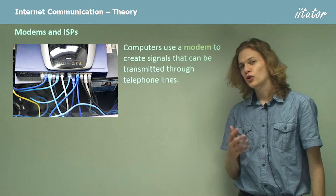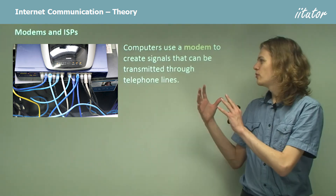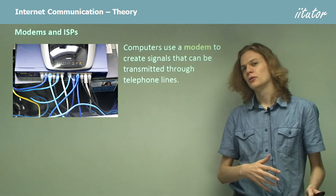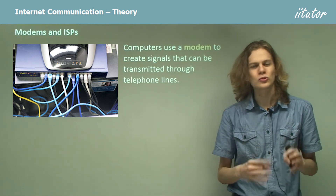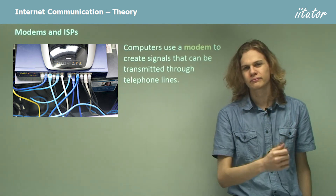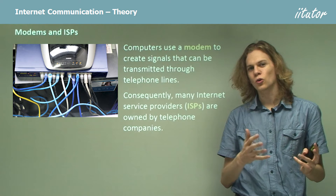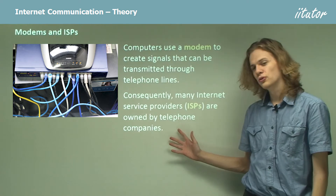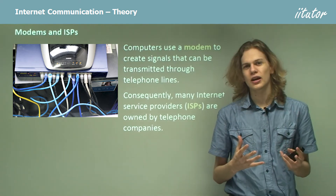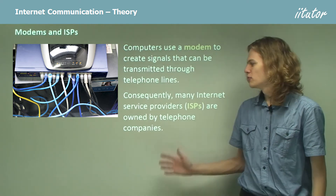Computers use a modem, which might look something like this, in order to turn the digital signals of the computer information into analog signals which can be sent through phone lines. Consequently, because phone lines are controlled by telephone companies, a lot of the internet plans that you can get are also associated with big phone companies.